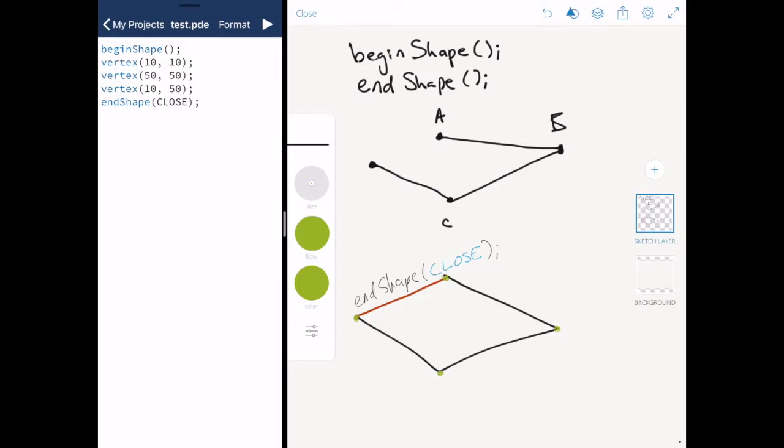So rather than drawing a line from A to B, then a line from B to C, then a line from C to D, and a line from D to point A, all I have to do is define the location of these corners, these vertices, and call endShape CLOSE to draw this shape.